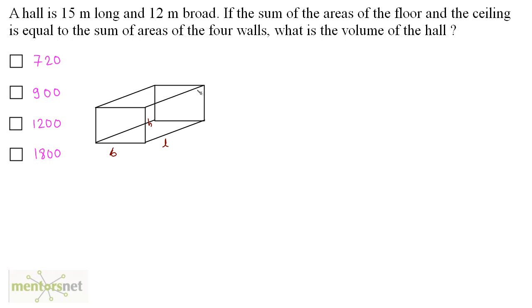What is the area of the floor? That's L times B. This is B, this is L. So the area will be L times B, and the ceiling is similar — the area is the same. So we have LB plus LB equals the sum of the areas of the 4 walls.